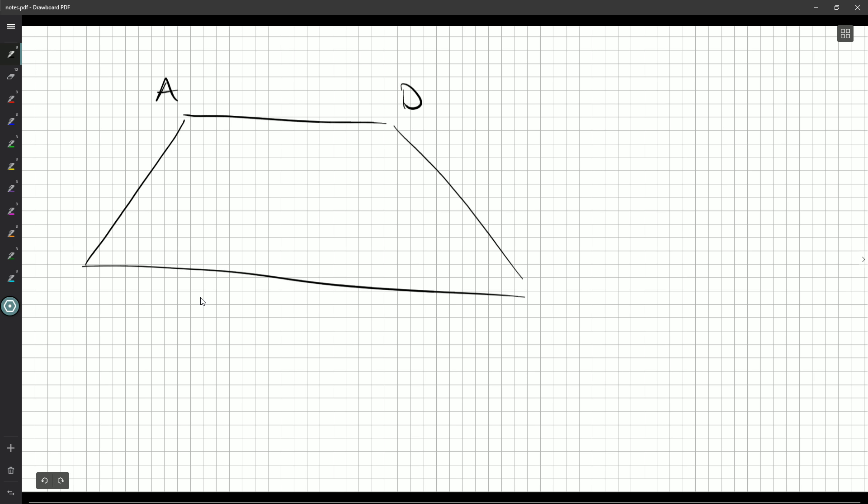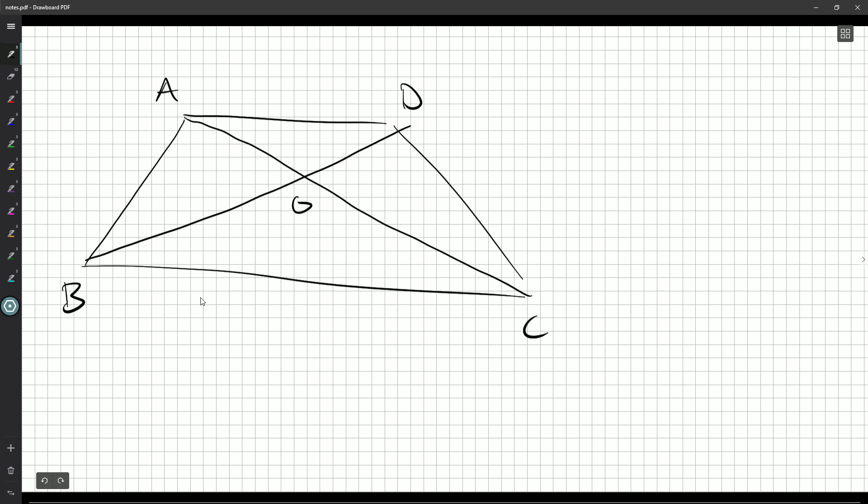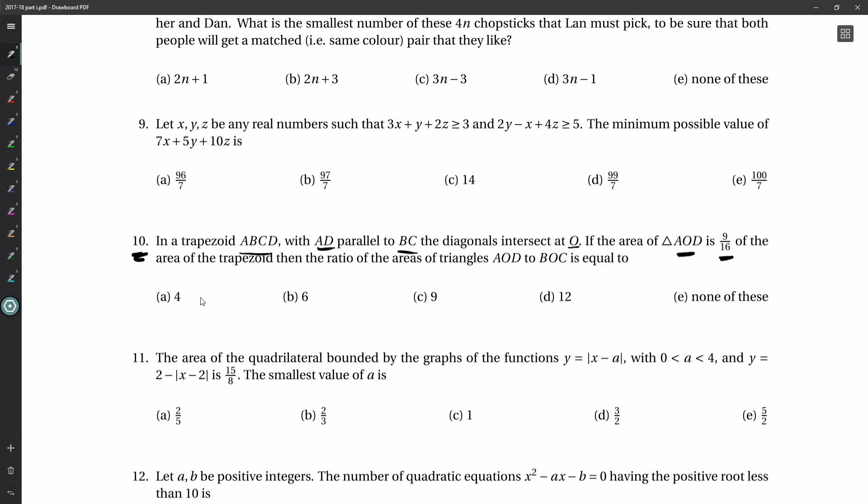AD, we'll go counterclockwise there. And then our diagonals here intersect at O. If the area of AOD is 9/16ths, so it looks like I gave it up the short side, so we'll change it to A, B, C, D. There's our O. So down here is 9/16ths, a little over half of the whole thing of the trapezoid.